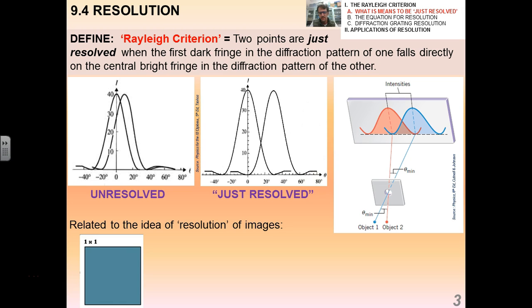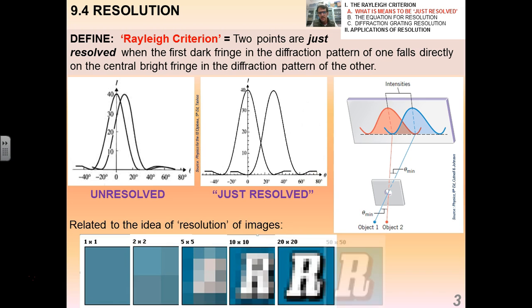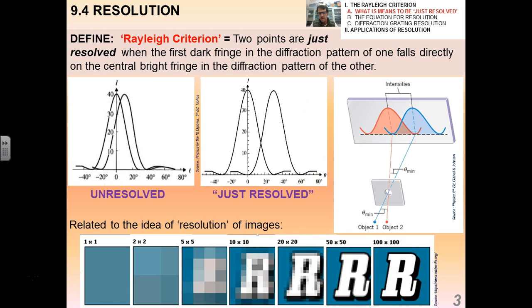This is related to the idea of resolution of images. I know you guys have your phones and the camera has a certain pixel rating and so forth. Generally the higher the resolution of something, the sharper or clearer the image. This is a certain object that's 1 by 1 pixel, 2 by 2, 5 by 5, 10 by 10, 20 by 20, 50 by 50, 100 by 100, and you can tell that really it isn't until you get to about 10 pixels by 10 pixels that you can actually figure out what this object is.